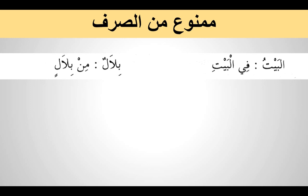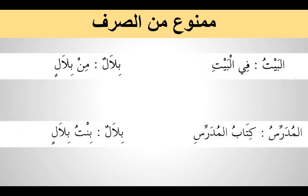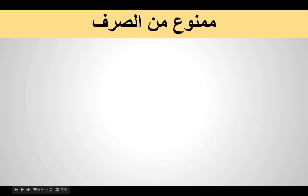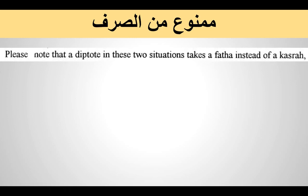For example, al-baytu becomes fil-bayti, and Bilalun becomes min Bilalin — like a normal noun which takes tanwin and declines normally. Al-mudarrisu as a mudaf ilayhi example: Kitabu al-mudarrisi. Bintu Bilalin. So we see the kasra with an indefinite noun has tanwin, and if it is definite it takes a single kasra. But a diptote in these two situations — ism majroor or mudaf ilayhi — doesn't take kasra; it ends in fathah.